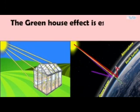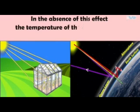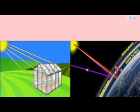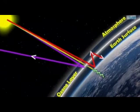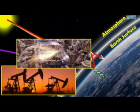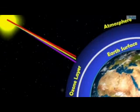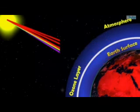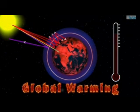The greenhouse effect is essential in order to keep our planet warm. In the absence of this effect, the temperature of Earth's surface would have been minus 20 to minus 40 degrees Celsius. But too much of something is bad — just as excess heat would burn plants in a greenhouse, over the last two centuries human activities have changed Earth's atmosphere dramatically. The amount of greenhouse gases has increased and continues to increase. They trap too much heat, and this excess greenhouse effect results in global warming — an increase in Earth's average temperature.